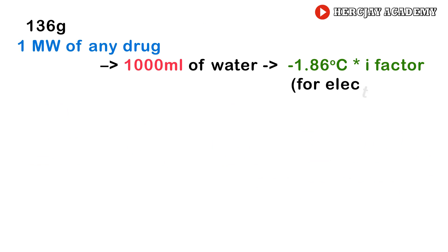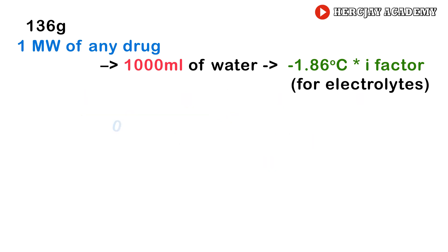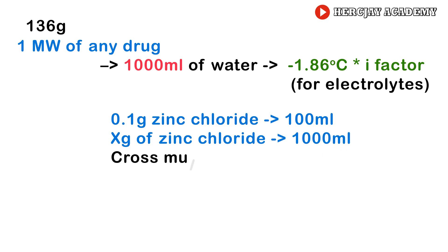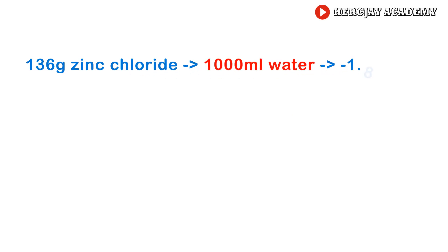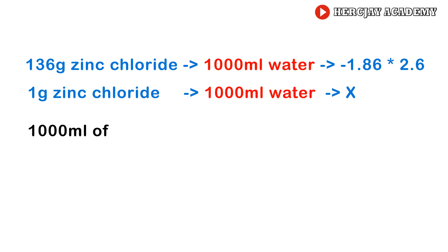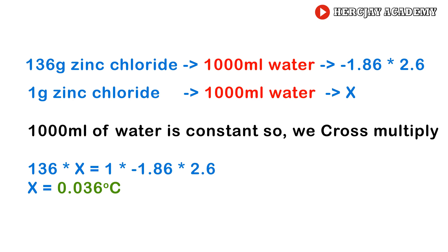From our freezing point formula, we need 1000 mL of water as the constant so we can cross-multiply. The question asks for the freezing point of 0.1% ZnCl₂, meaning 0.1 g in 100 mL; so in 1000 mL there is 1 g of ZnCl₂. Applying the formula: 136 g ZnCl₂ freezes at −1.86 × 2.6. For 1 g in 1000 mL, cross-multiplying gives X = (1 × −1.86 × 2.6) / 136 = −0.036°C.